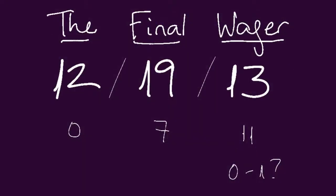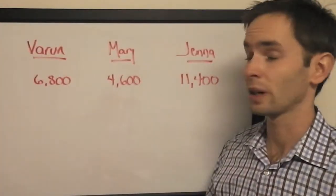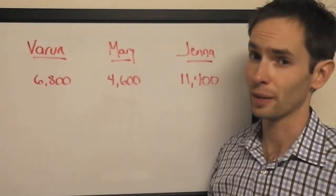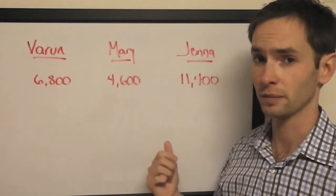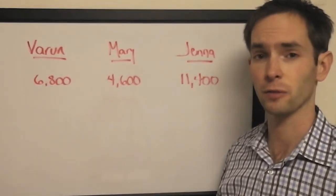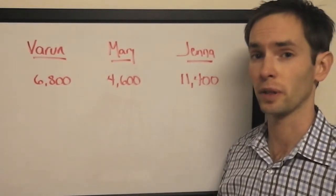It was really great to hear Alex talk about the importance of wagering properly before today's game, and little did he know we have a really tricky situation in today's final wager. For the second night in a row, Varun is trailing heading into Final Jeopardy. This time he's sandwiched between two ladies: Jenna, one of the challengers in the lead with $11,400, and Mary in third place with $4,600.